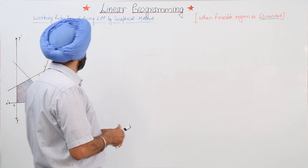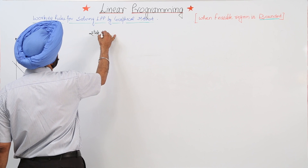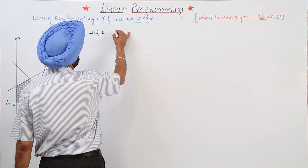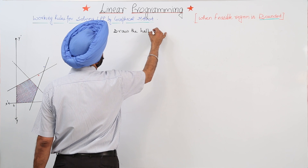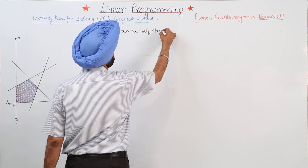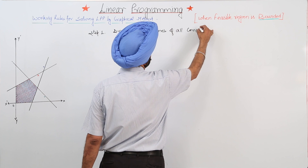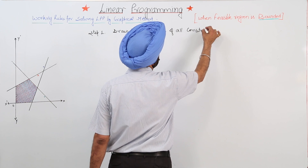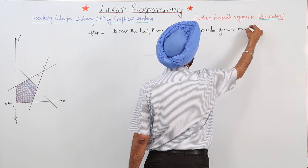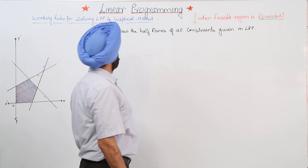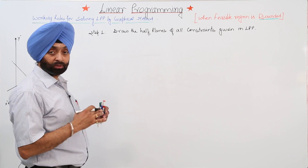Now let's move with some easy steps. Step number 1: draw the half planes of all the constraints given in the linear programming problem. This means we have to draw first all the constraints.